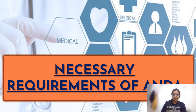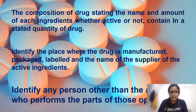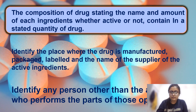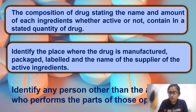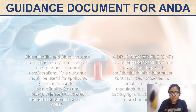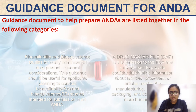The necessary requirements of ANDA include: first, the composition of the drug, stating the name and amount of each ingredient — whether active or inactive — contained in a stated quantity of the drug. Second, identify the place where the drug is manufactured, packaged, and labeled, and the name of the supplier of active ingredients. Third, identify any person other than the applicant who performs part of those operations.